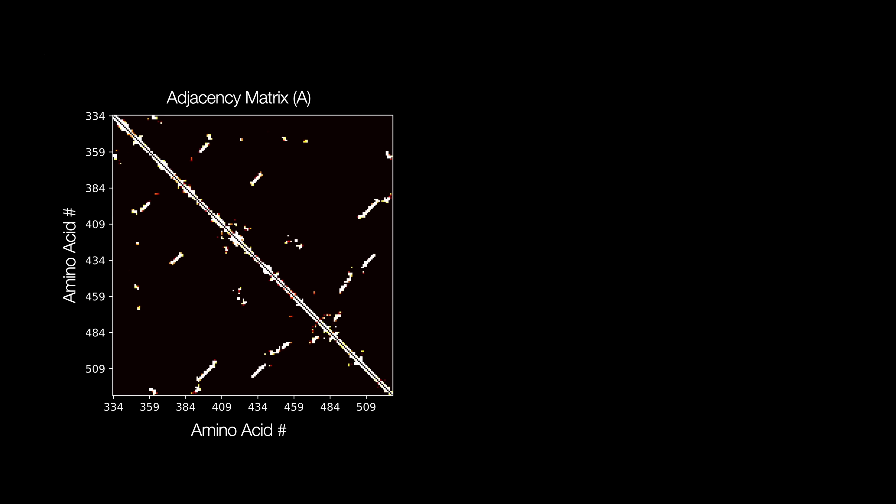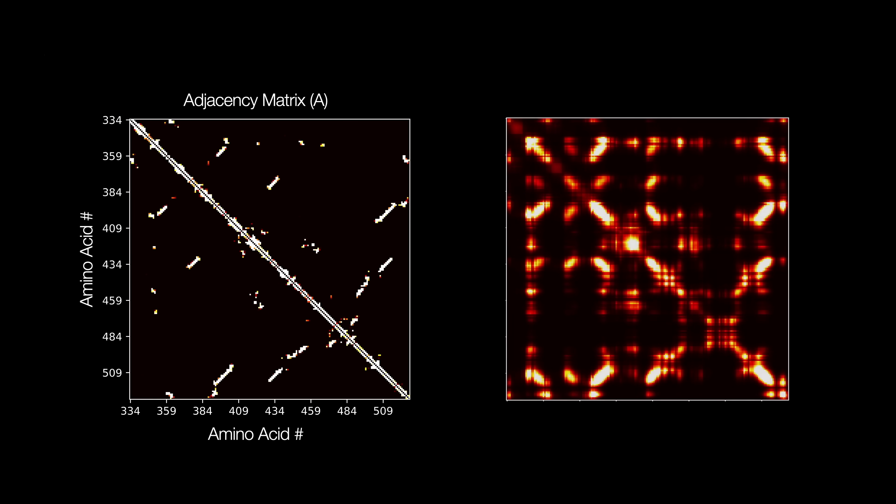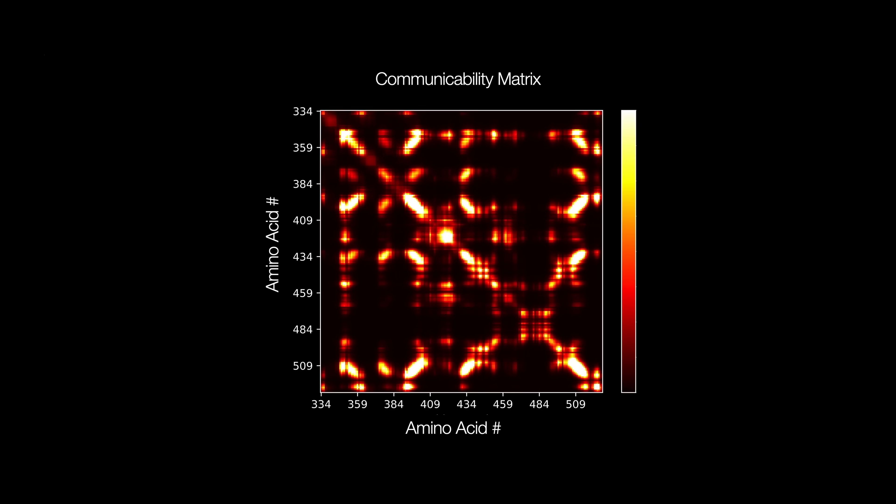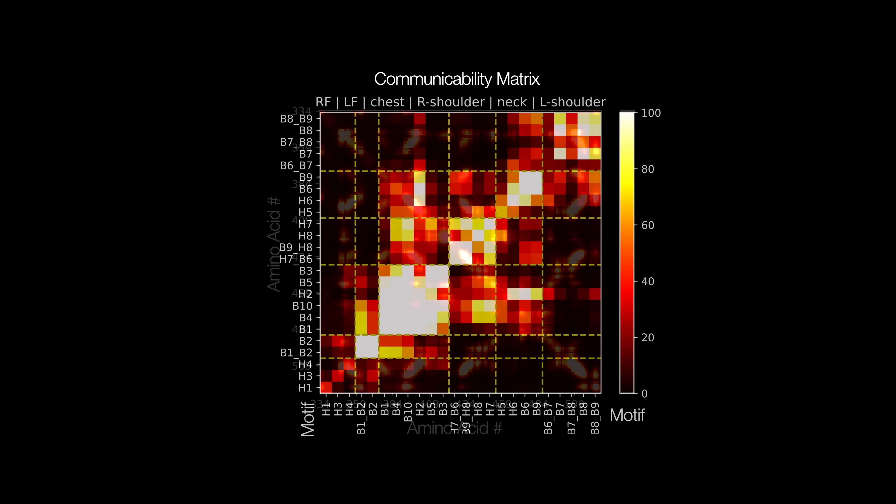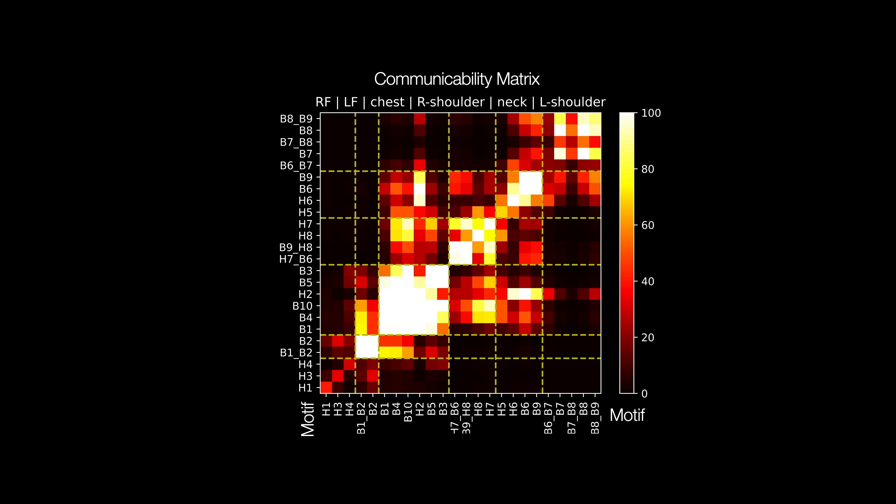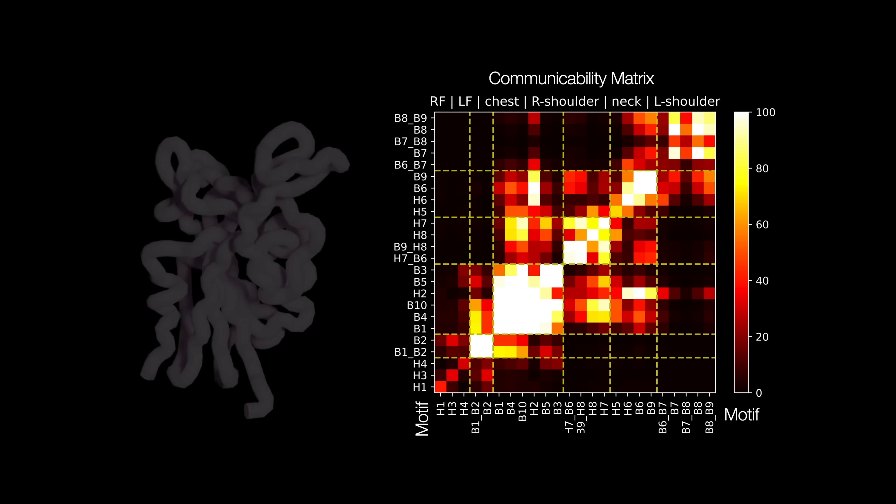Effectively, this new matrix we've created represents the net signal after signal transmissions have settled down. We call it the communicability matrix. Let's now group all of the residues that are on the same helices and loops together to see the bigger picture.